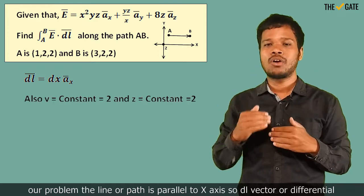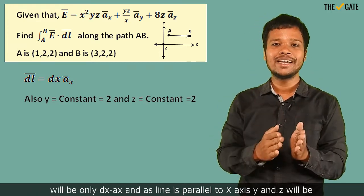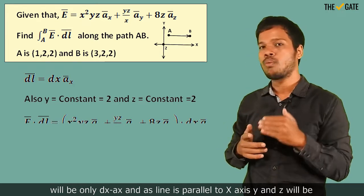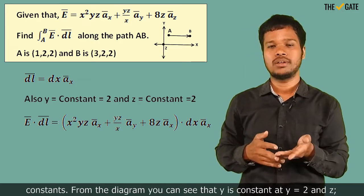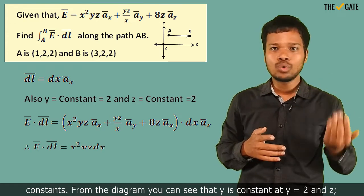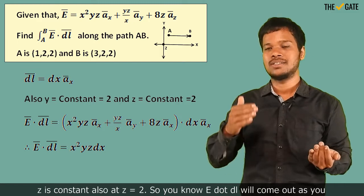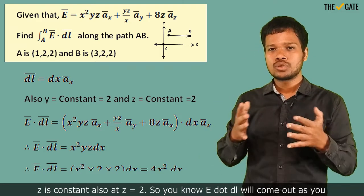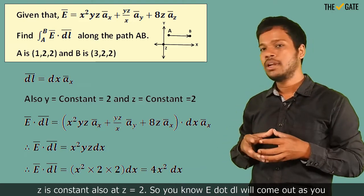So dl vector or differential will be only dx ax. And if the line is parallel to the x-axis, y and z will be constants. From the diagram you can see that y is constant at y = 2 and z is constant also at z = 2.